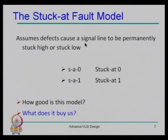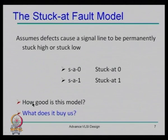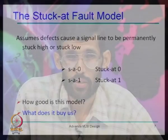One of the simplest models assumes that a defect causes a signal line to connect permanently to logic high or logic low. This is the implication of the defect, and we model it as a stuck-at-0 fault or stuck-at-1 fault. Two questions arise: how good is this model, and how close is it to the real defect implication?